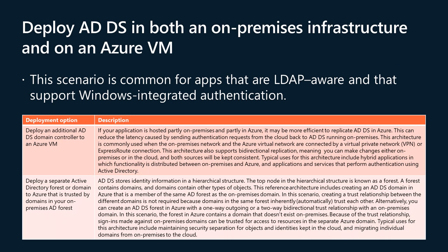Deploying ADDS in both an on-premises infrastructure and on an Azure VM is common for apps that are LDAP-aware and support Windows integrated authentication. This scenario requires creating a VNet with cross-premises connectivity and proper IP address allocation for VMs running in the cloud. The primary goal is to optimize cost since inbound traffic ingress is free but outbound traffic egress is not, and systems in Azure would refer to the ADDS domain controllers in Azure for authentication, LDAP lookups, and name server resolution, providing faster performance and a better sign-in experience.